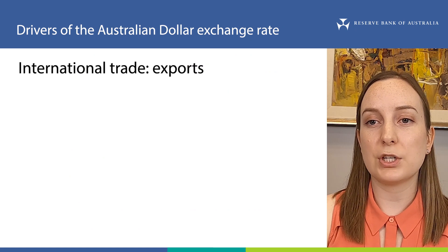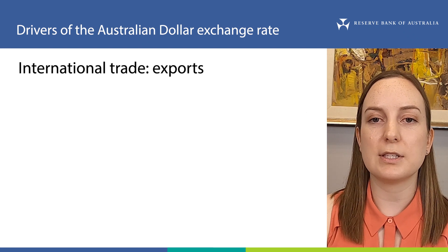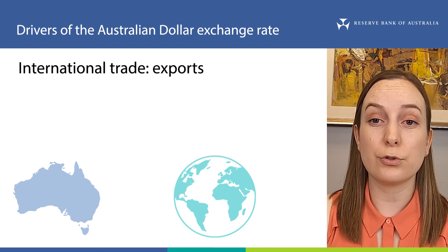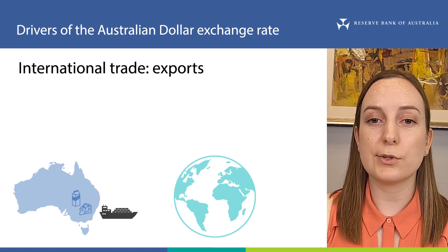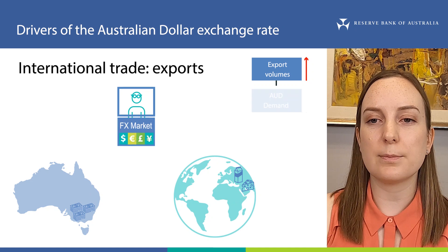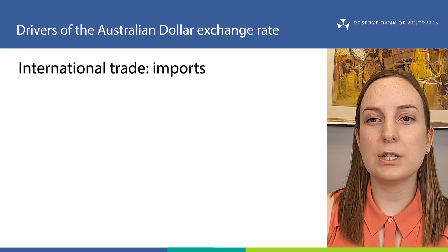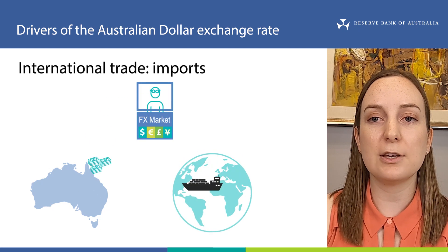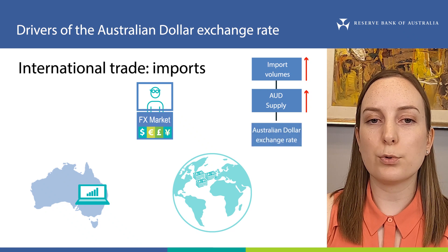The final long-term driver of the exchange rate that we'll look at is international trade. This includes international trade in commodities, but also other goods and services that Australia trades with the rest of the world. When Australian dollars are bought and sold to facilitate international trade, this affects the supply and demand of Australian dollars and the exchange rate. For example, when Australians export goods or services, overseas buyers must purchase Australian dollars to pay the exporter. More exports increases demand for Australian dollars and leads the Australian dollar to appreciate. On the other hand, when Australians import or buy goods and services from overseas, the importer must sell Australian dollars for foreign currency to pay the overseas seller. More demand for imports increases the supply of Australian dollars and the Australian dollar depreciates.